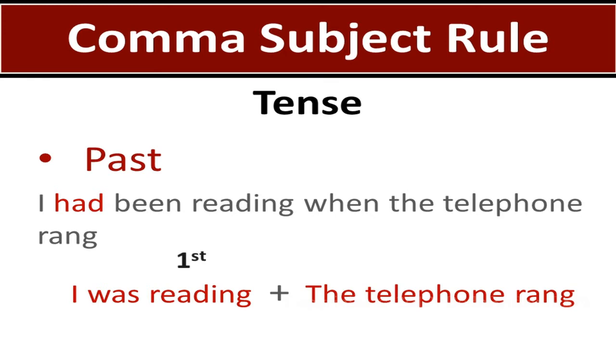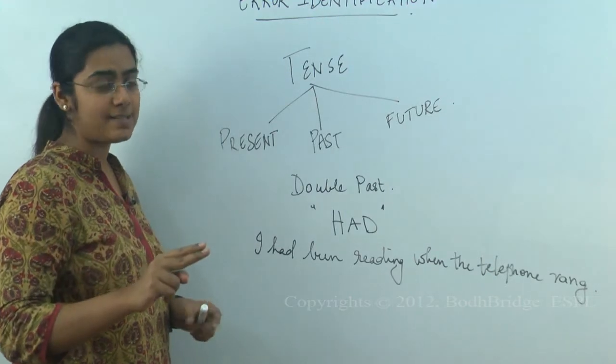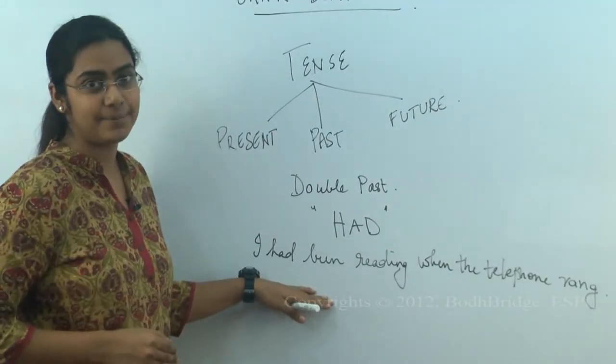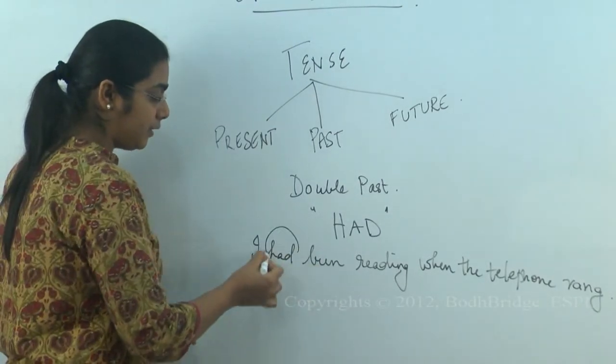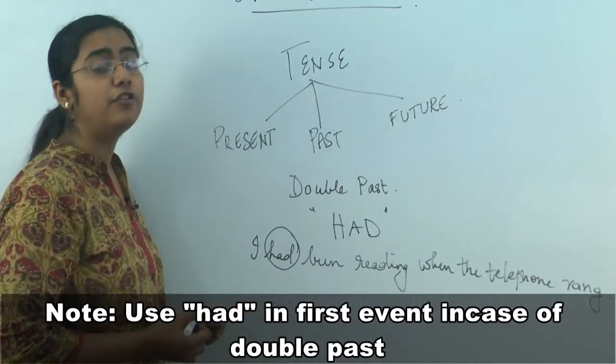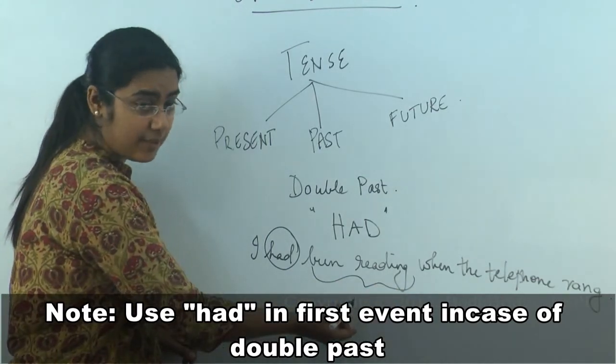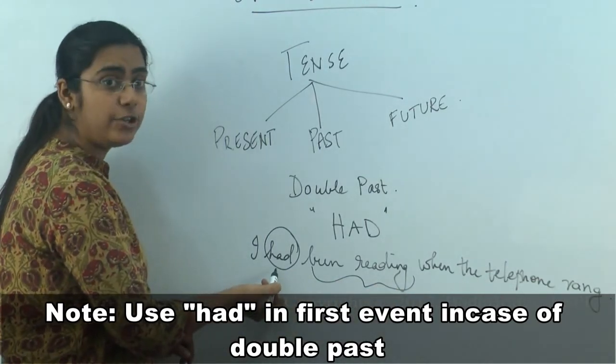When you look into this sentence, it clearly tells you that reading happened first. The telephone ringing happened next. So, in that case, when you deal with two events in the past, one happened first followed by the next. Remember to use had with the first event. Reading here is the first event. So, in that case, you use had. We call it double past.